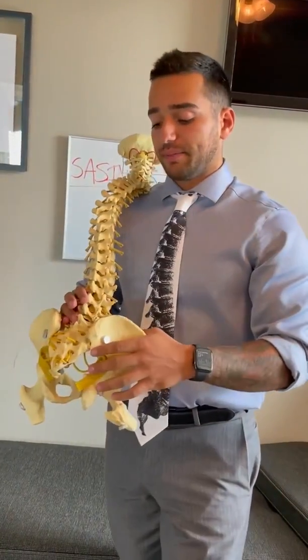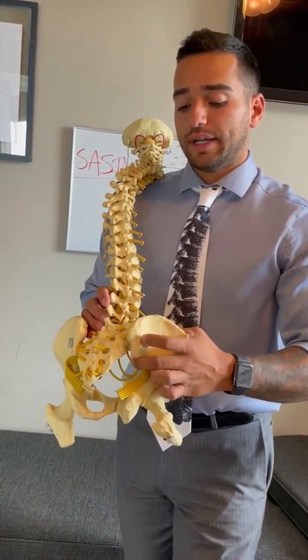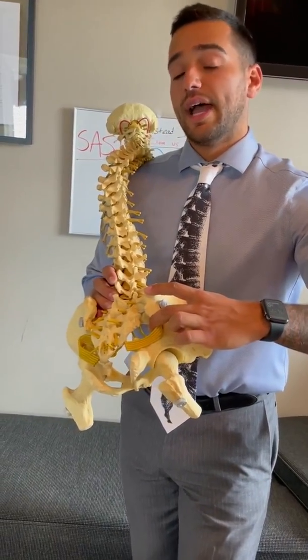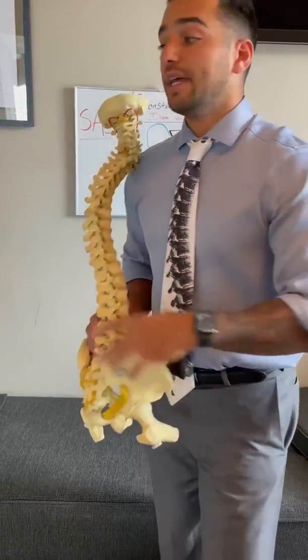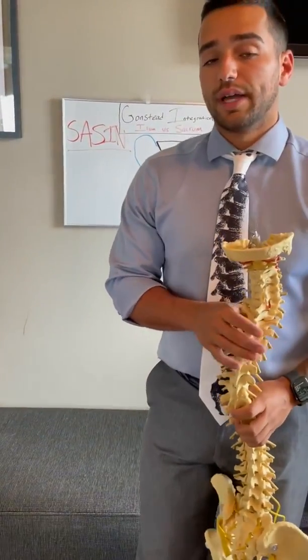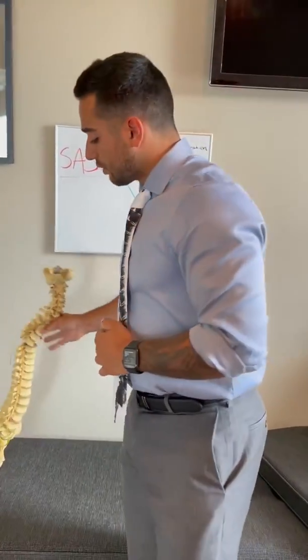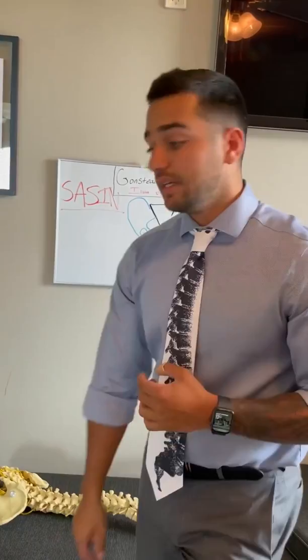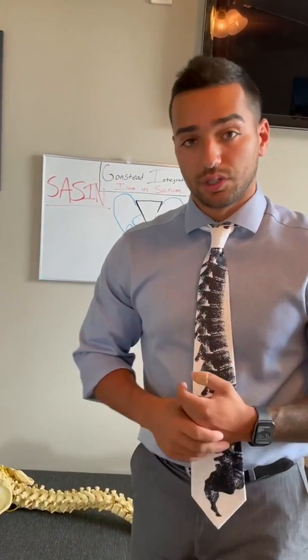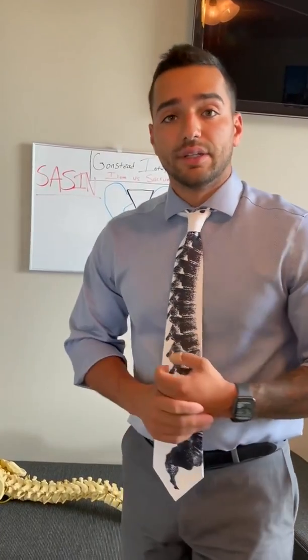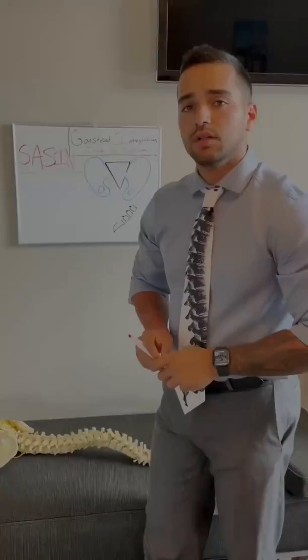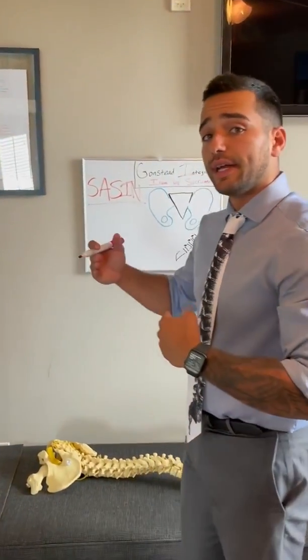If the segment is posterior on an AS or IN and that's causing some dysfunction, now we get into the SASIN listing. All of our other findings are pointing towards an ASIN subluxation. This is one of the few times we use a leg check — and this is not your normal leg check where we bend the legs. We don't do that because of how unreliable that is. You can have an atlas subluxation causing a leg to be longer or shorter, so we don't want to use that to tell us if there's an ilium problem.